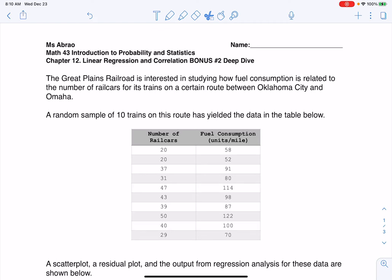Hey Math 43, welcome to your second bonus deep dive from chapter 10. If you read through this, you can see that this problem is talking about trains. We're trying to look at the relationship between the number of railcars and how much fuel those railcars wind up tacking on to your overall fuel consumption. But I do want to point out I have two numerical variables here, and whenever you have two numerical variables, you're going to be looking at something along the lines of regression analysis.